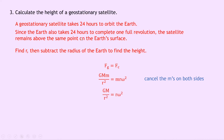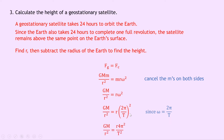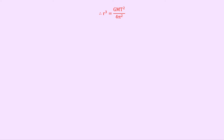We're given a period of 24 hours, so we want to get the period term T into our expressions. We can rewrite it as GM over r squared equals r times 2π over T, all squared, since omega equals 2π over T. Multiplying out the brackets gives GM over r squared equals r times 4π squared over T squared. We can cross multiply to get an expression for r cubed and divide by 4π squared, giving r cubed equals GMT squared over 4π squared.